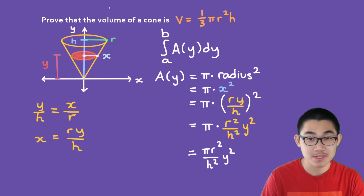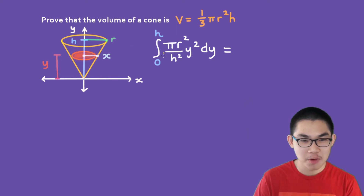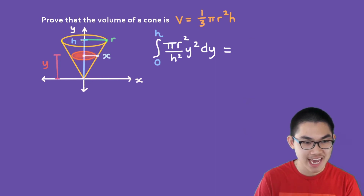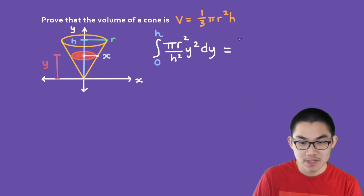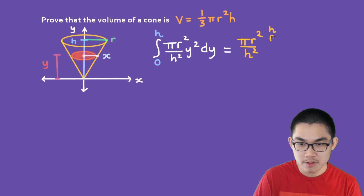Now we substitute into our integral. The volume integral runs from 0 to h, so we have the integral from 0 to h of πr²/h² × y² dy. Since π, r, and h are constants, we can move them outside the integral, giving: πr²/h² × the integral from 0 to h of y².